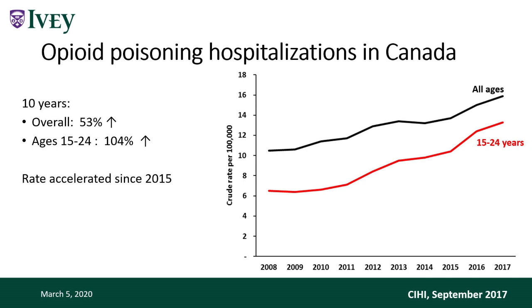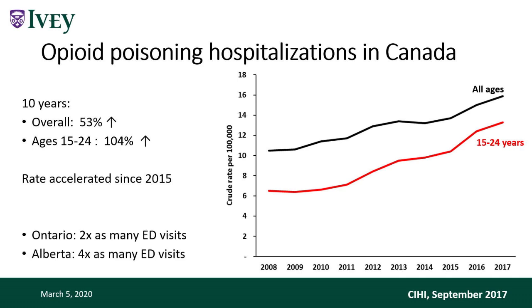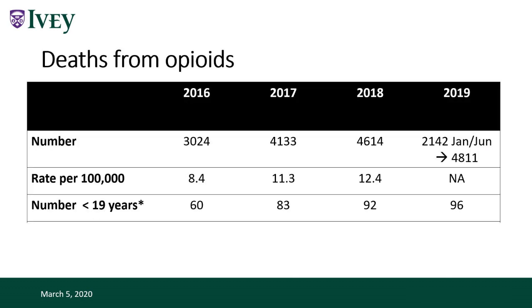This is resulting in a lot of hospitalizations. Over the last decade we've seen about a 53% increase in opioid-related hospitalizations, and more than 100% for young people. In Ontario we've seen a doubling; in Alberta, a quadrupling of opioid-related hospitalizations. The total number of opioid-related deaths has gone from 3,000 in 2016, when we already knew we had a crisis, to 4,600 last year. We're looking at perhaps 4,800 to 5,000 opioid-related deaths in Canada this past year, with about 100 of them under the age of 19.